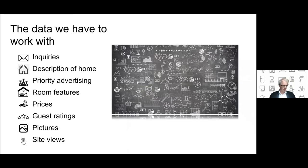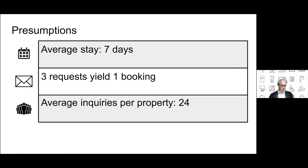We were initially given eight datasets to work with, covering inquiries, home descriptions, priority advertising, room features, prices as listed by the homeowners, guest ratings, pictures, and their respective sizes, qualities, and site views. Going into this project, we made some assumptions: the average stay would be seven days, roughly three requests were required to yield a single booking, and the average inquiries per property were proportionate to about 24.